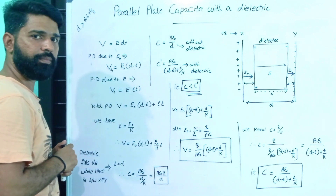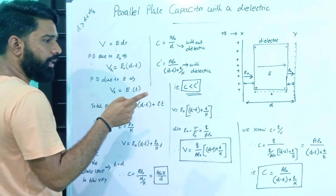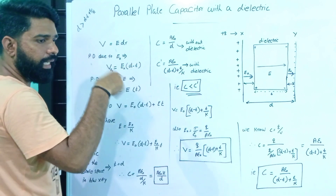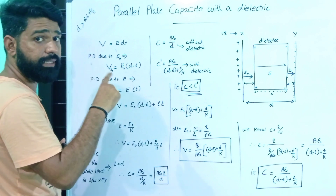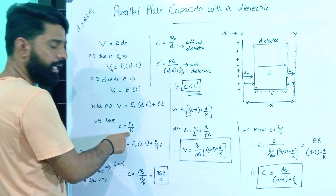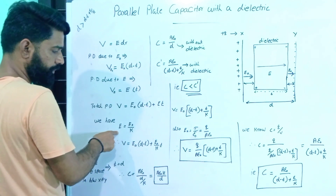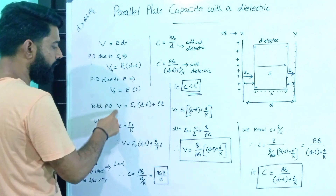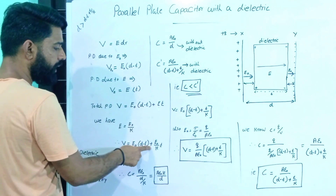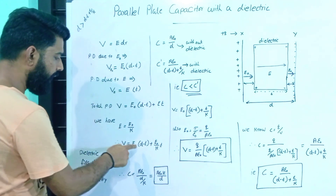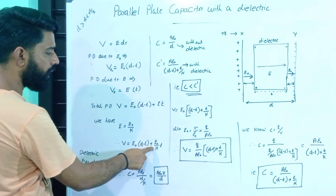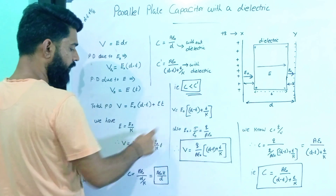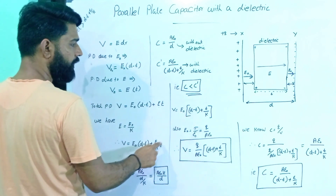We will learn about the dielectric constant. The relationship between the electric fields is E = E₀ divided by K, where K is the dielectric constant. Substituting E = E₀/K into the potential difference equation, V equals E₀ into (d minus t) plus (E₀ by K) into t. Taking E₀ as common, V is equal to E₀ into [d minus t plus t by K].